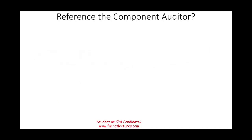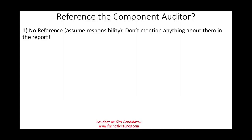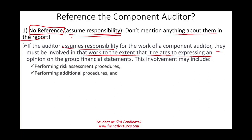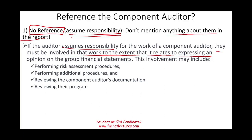Would I reference the component auditor or not? I have two options. Option one: no reference — this is called assuming responsibility. I am accepting their work and not mentioning their name in the report whatsoever. You would not be aware that a company in Lebanon called Lebanese Auditing Services did any work. If the auditor assumes responsibility, they must be involved in that work to the extent that it relates to expressing an opinion on the group financial statement. The involvement may include performing risk assessment procedures, performing additional procedures, reviewing the component auditor's documentation, and reviewing their audit program. You have to do a little more work because you are assuming responsibility and not referencing anyone.